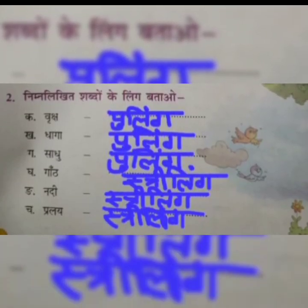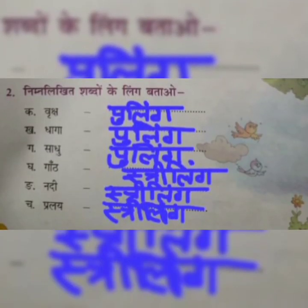The next is the second question: Nimnlikhit shabdon ke ling batao — means write the genders of the following words. Pahla hai Vriksh — pulling (masculine). Dhaga — again pulling (masculine). Sadhu — pulling (masculine). Gaant — striling (feminine). Nadi — striling (feminine). Pralay — striling (feminine).